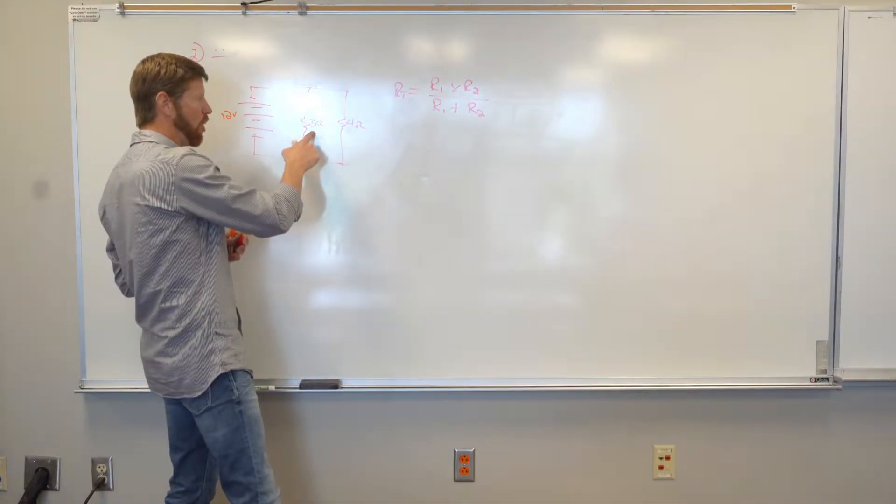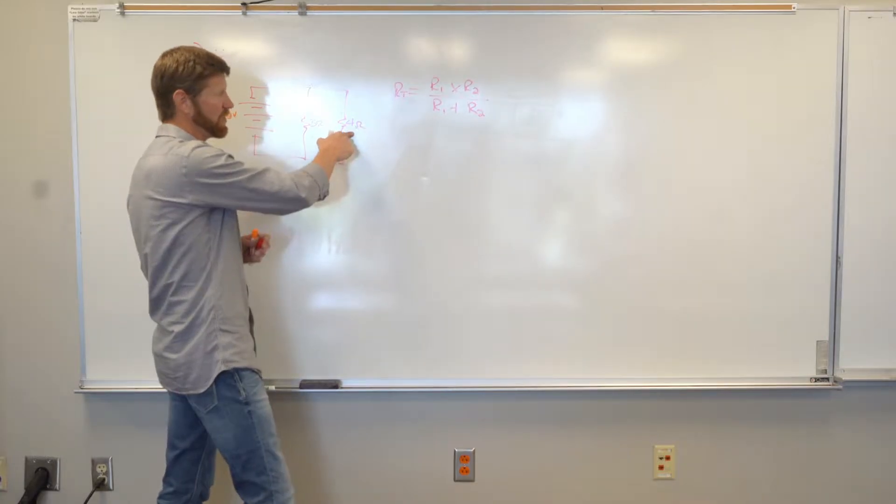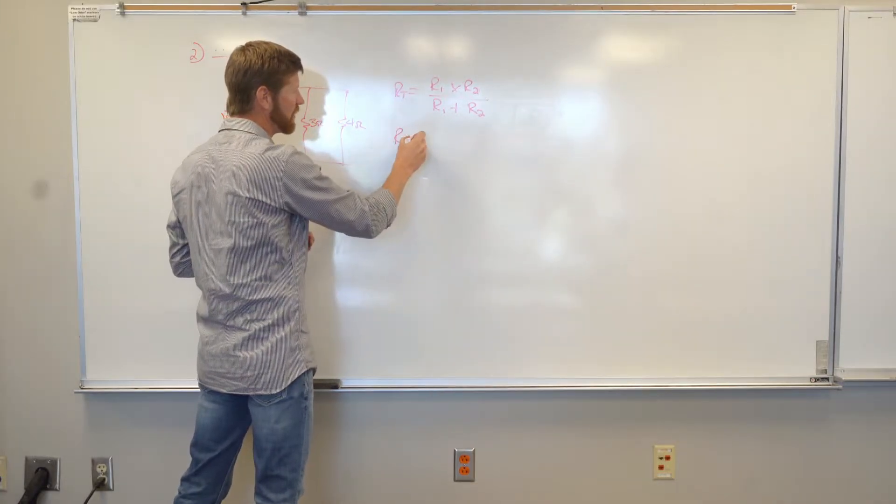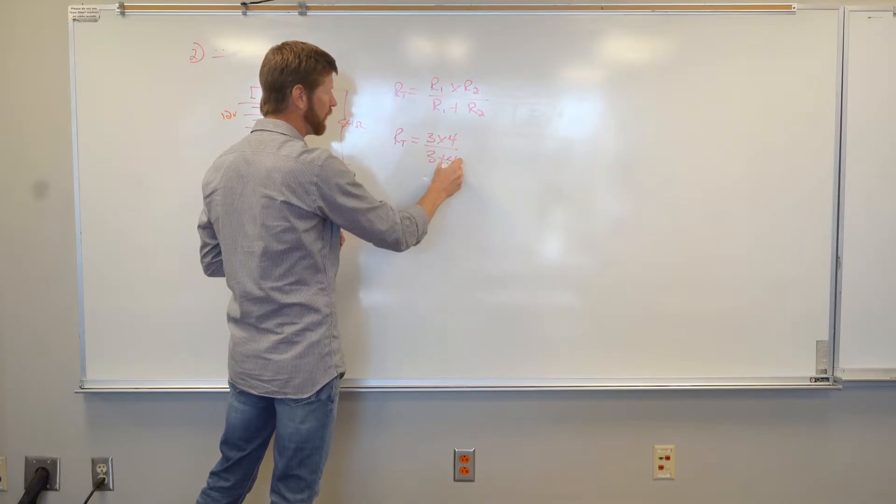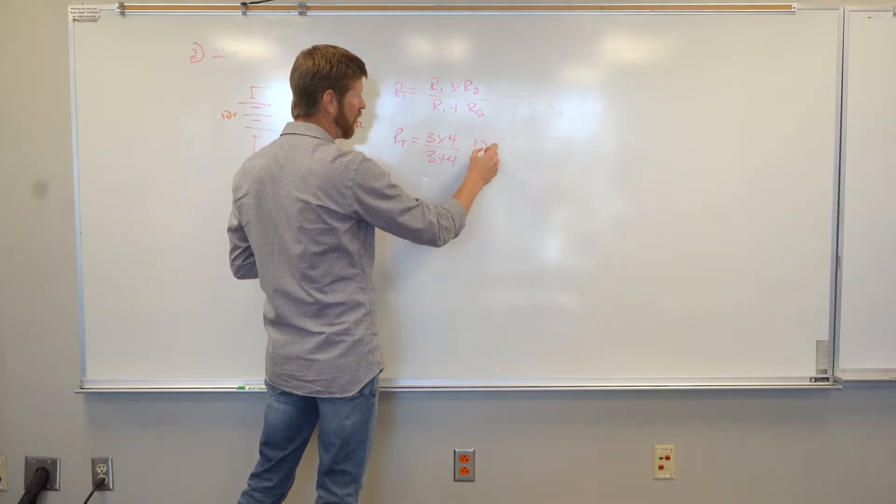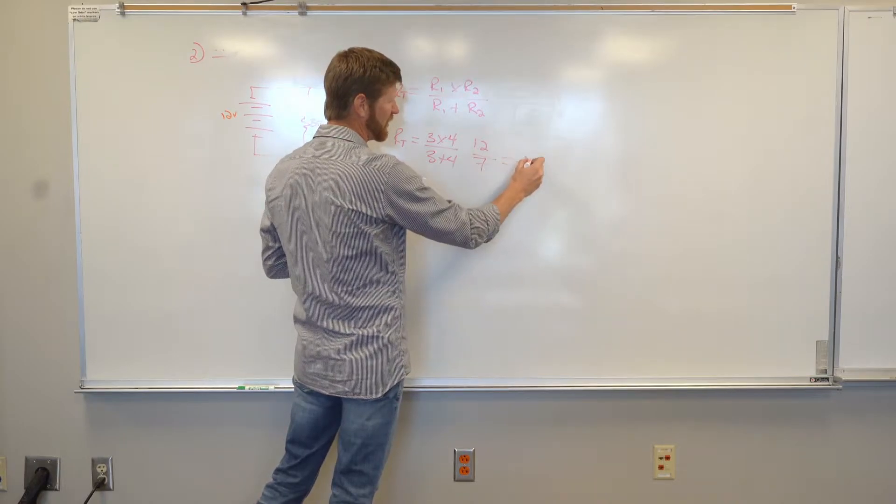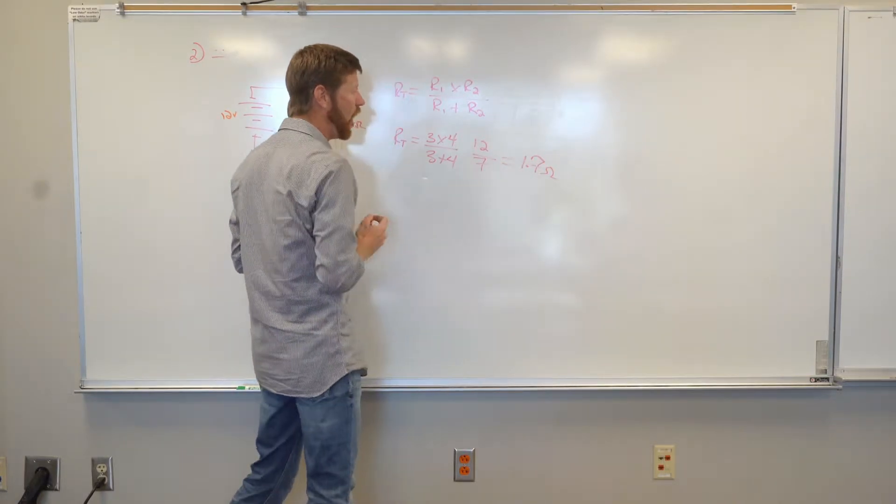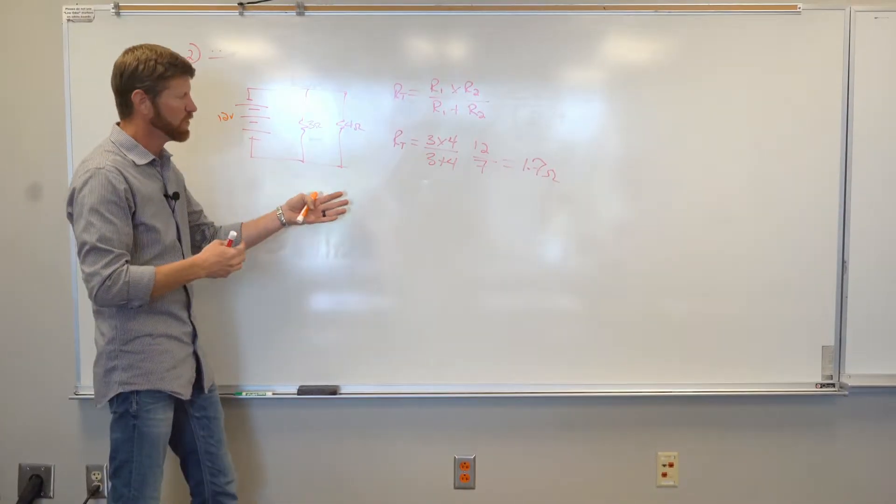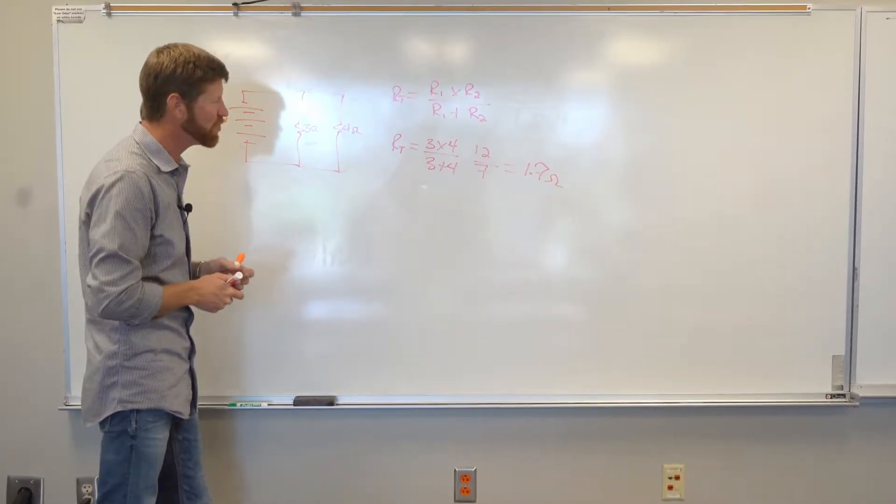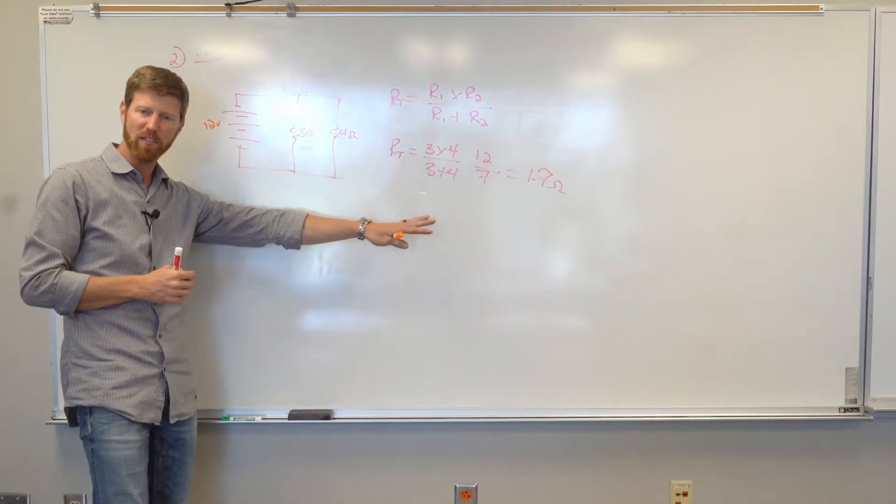So if I take and call this resistor one, this resistor two, I plug this into this equation and I get three times four over three plus four. So that's like 12 divided by seven, which is like 1.7 ohms for our total. So again, a little bit of math involved, a little bit of an equation. So that's the frowny face part.